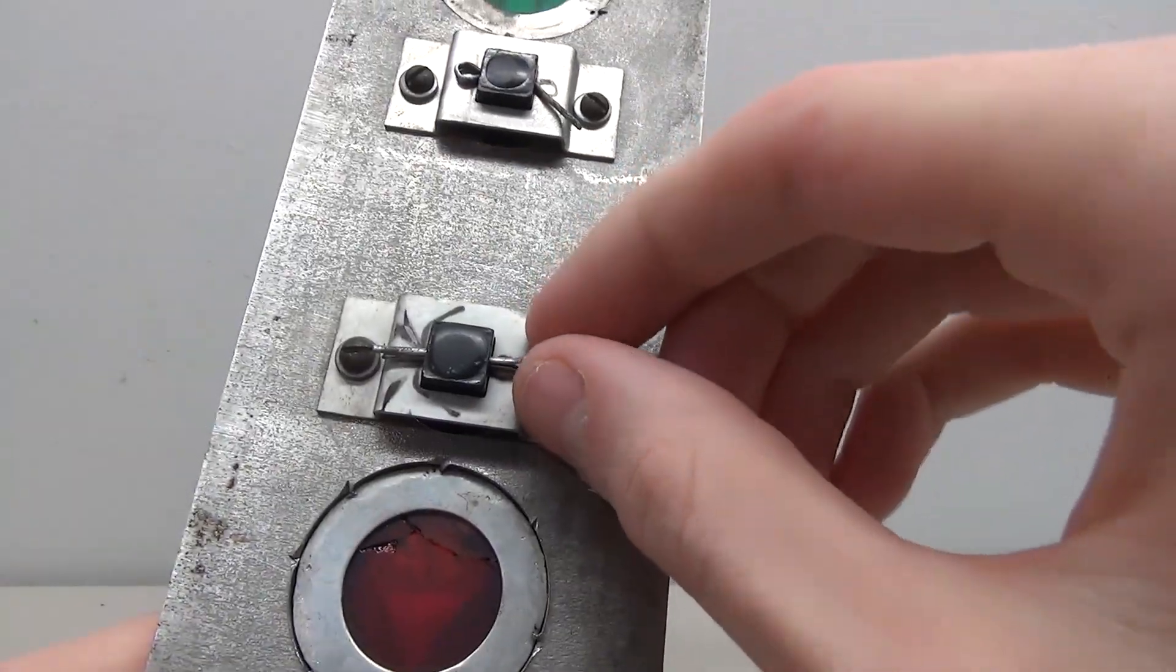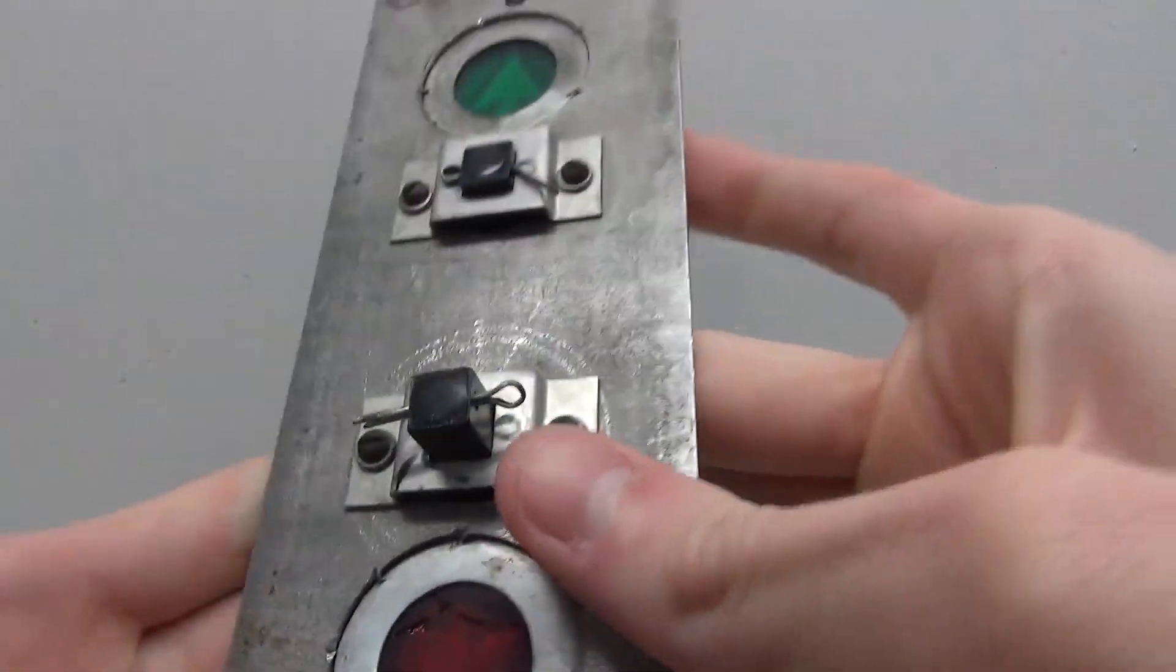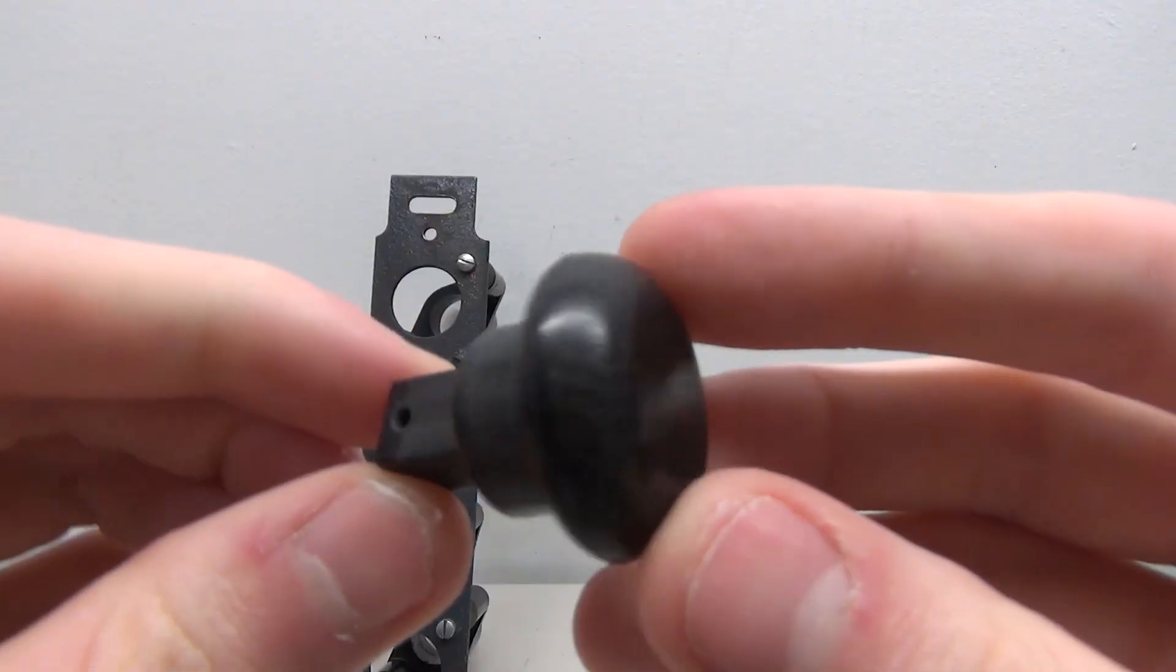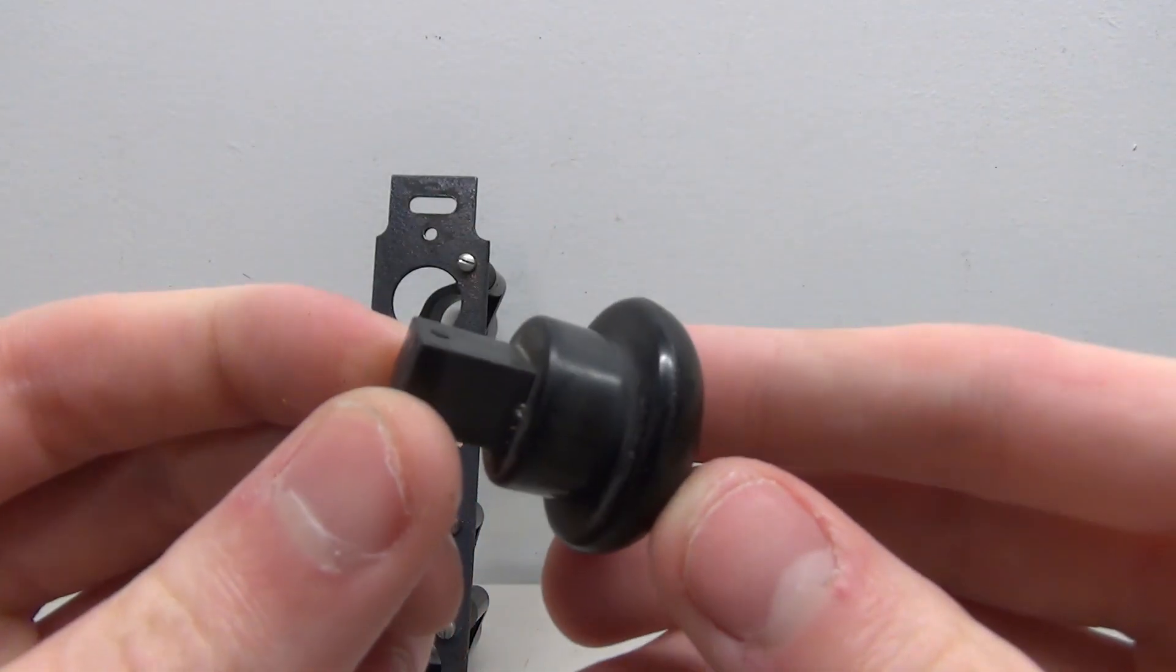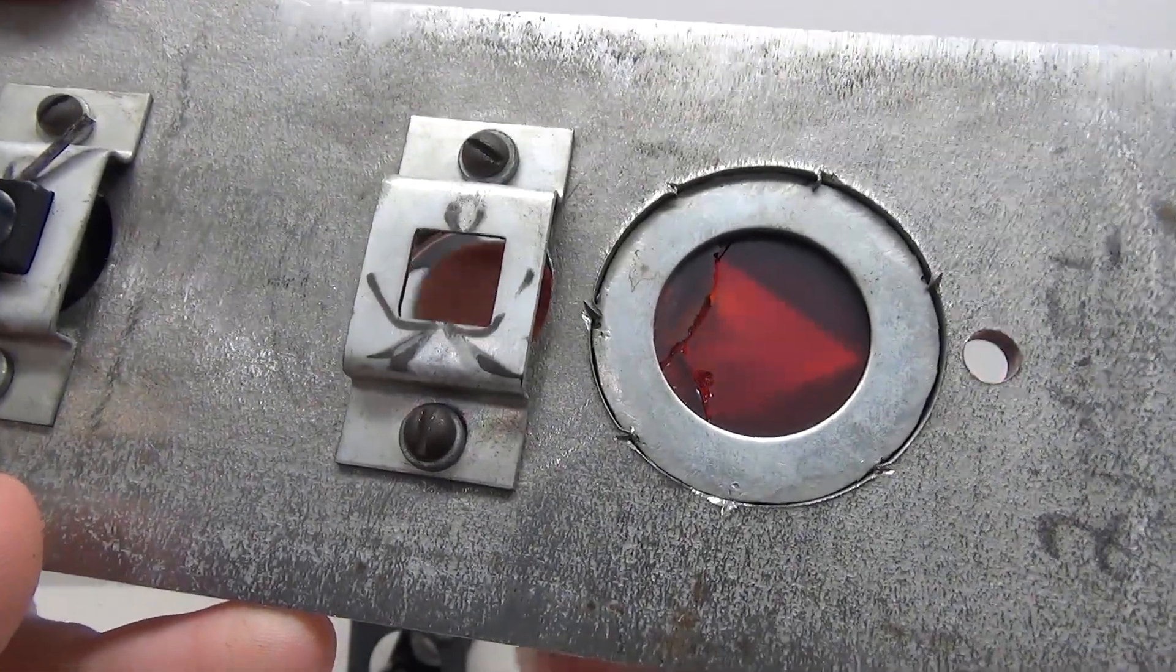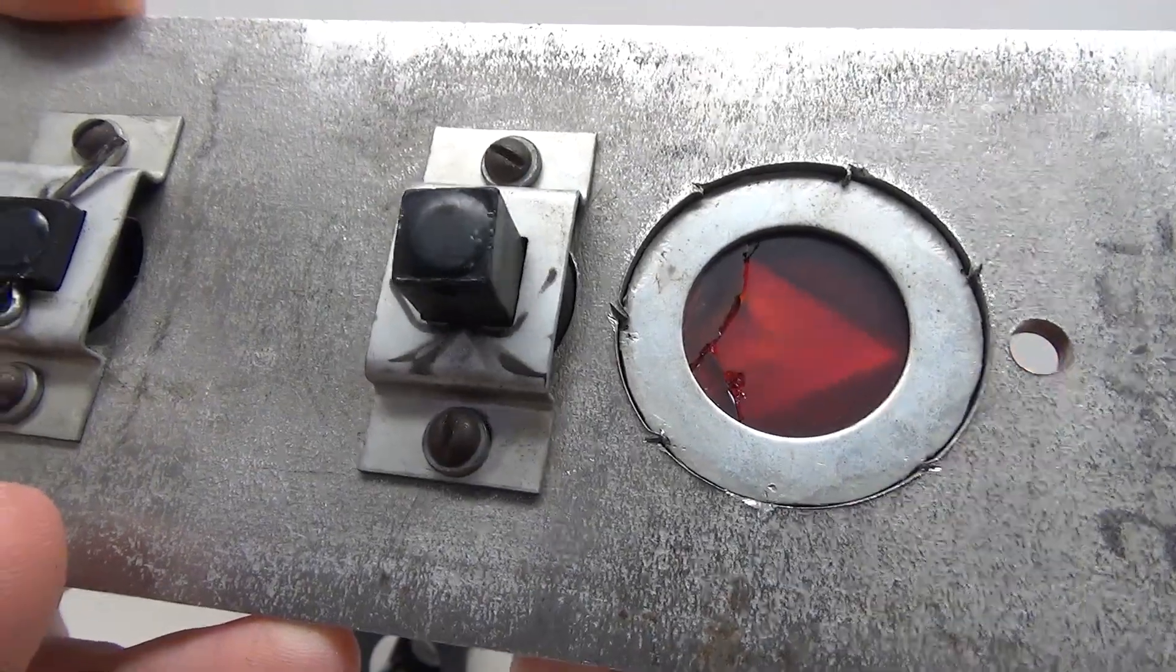The two buttons are held on pretty simply. You can see here there's this little piece that's mounted to the button, and each button is held in with a little pin. If you pull the pin out you can then remove the actual button. Here's what the buttons themselves look like - pretty simple, pretty solid pieces of plastic.